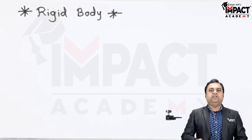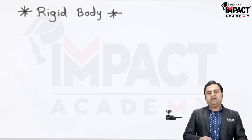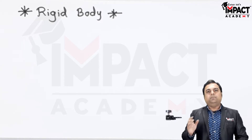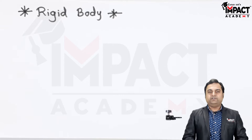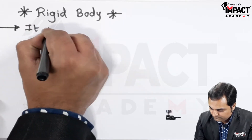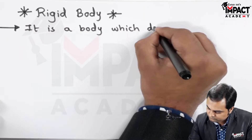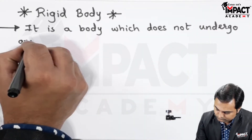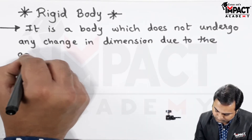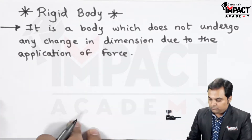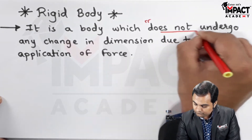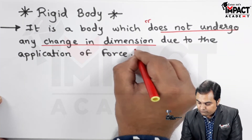So this is just a theoretical concept, and whenever we are dealing in mechanics we are considering rigid bodies. It is not essential to write everywhere that we are using a rigid body, but whatever examples we are taking are of a rigid body. By definition, a rigid body does not undergo any change in dimension due to the application of force or load.